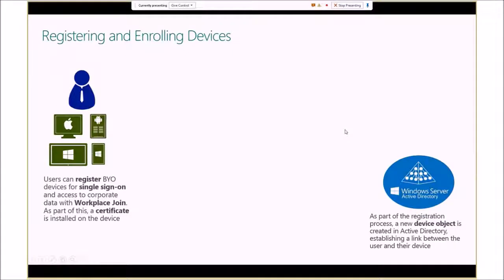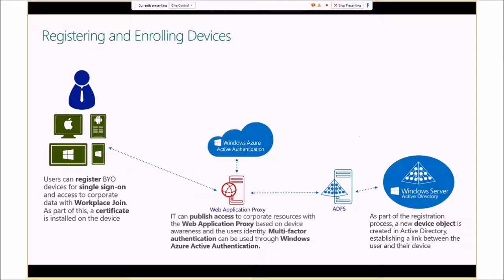With Windows Server 2012 R2 we introduced a new concept called device registration. Users can register their own bring-your-own devices for single sign-on and access to corporate data using Workplace Join. As part of this registration process, a certificate is installed on the device and a new device object is created in Active Directory. This device object establishes a link between the user and their device, makes it known to IT, allows the device to be authenticated, and provides seamless second-factor authentication.